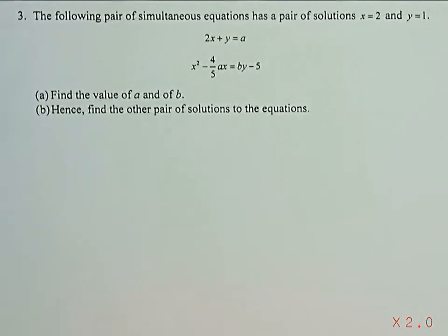The following pair of simultaneous equations has a pair of solutions x equal to 2 and y is equal to 1. Find the value of a and of b.